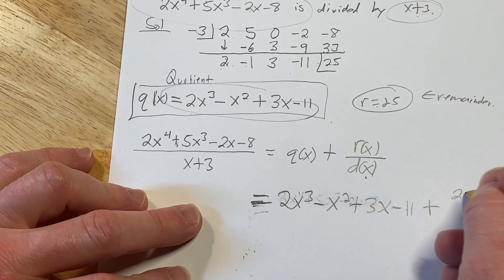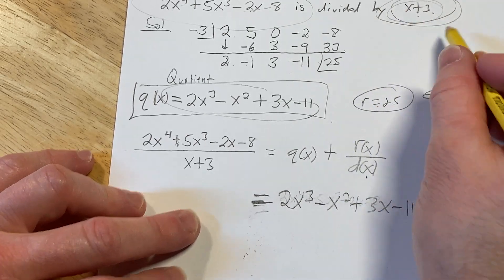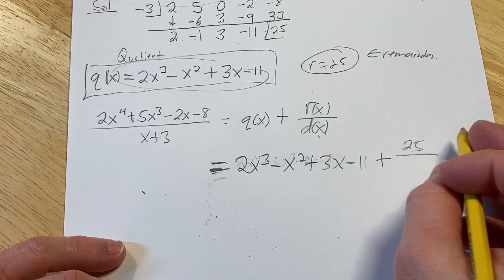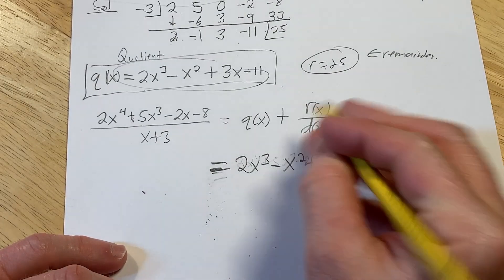2x cubed minus x squared plus 3x minus 11 plus the remainder, which is 25, over the divisor, which is right here. x plus 3 is our divisor. This is our little d of x. So little d of x is going to be x plus 3.